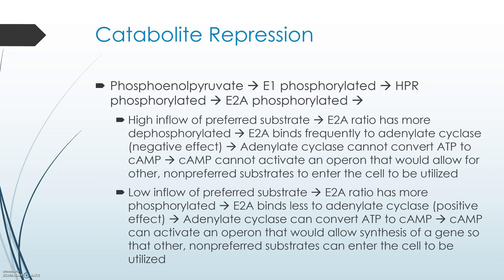For catabolite repression, the phosphate is passed along from phosphoenolpyruvate to E1, then HPr, then E2A, phosphorylating each enzyme in turn and dephosphorylating it as the phosphate is passed to the next. Once E2A is phosphorylated, there are two different options. I'll discuss these as we look at the images.